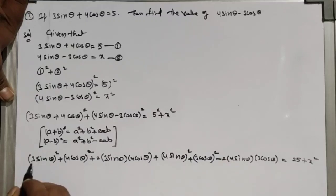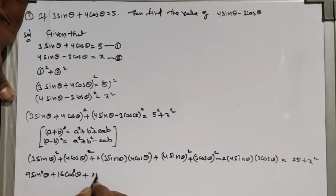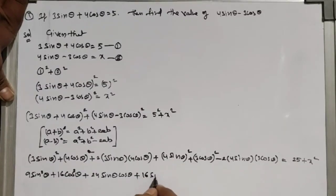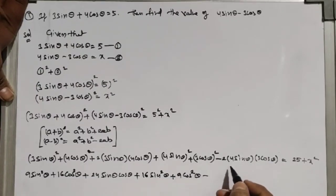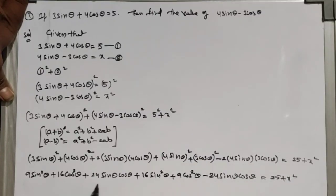Now observe: the +24sinθcosθ and -24sinθcosθ terms cancel each other out. We are left with 9sin²θ + 16cos²θ + 16sin²θ + 9cos²θ = 25 + x².